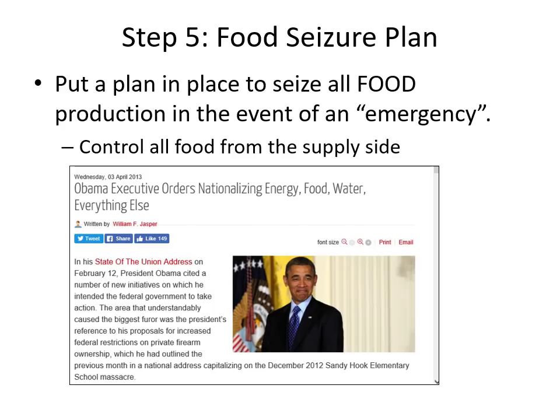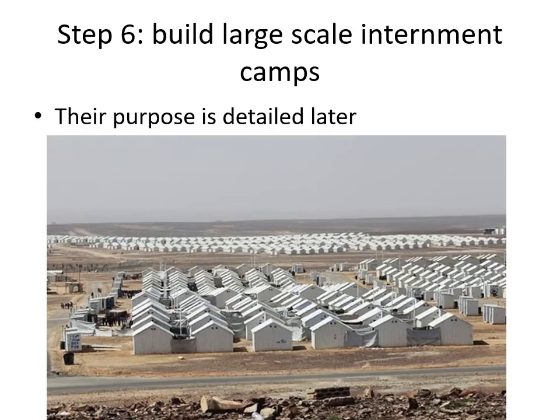Step five: you're going to need to put in place a plan to seize food. Obama did it — he put in an executive order documented in an article from April 3, 2013, which nationalized everything: energy, food, water, and everything else. The reason you need to seize the food — and energy — is because if you can control the food, you can control the people. Step six: build large-scale internment camps — their purpose will be explained later.